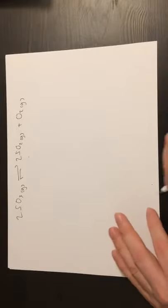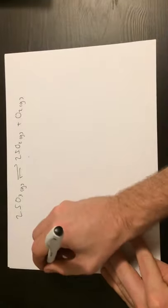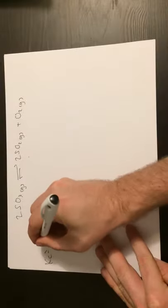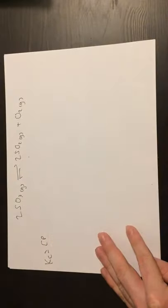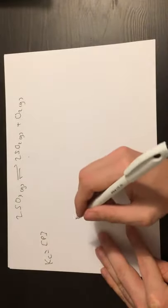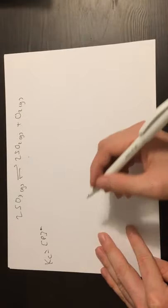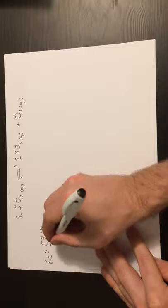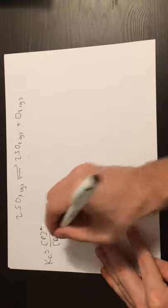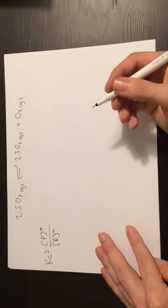So how would we write a Kc expression for this? Well, in general, Kc is the concentration of your products raised to the power of their molar ratio, the big number in the equation, divided by the concentration of the reactants raised to their molar ratio.